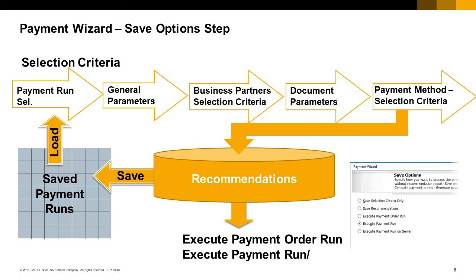There is also an option for issuing a payment order run that creates a bank file, does not create any journal entry, and leaves the invoices open. The invoices will be closed after getting the bank confirmation. When getting the bank confirmation, you can load the saved payment run, execute the payments, and close the invoices. The fourth option, execute payment run, simply executes the payments.